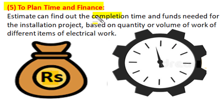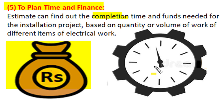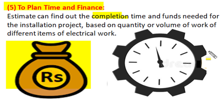The ultimate object of electrical estimation is to plan time and finance. The detailed estimation can find out the completion time for the project and the funds required for installation activity. Based on the type of material, quantity, and volume of work, we can assess both completion time and financial requirement of any electrical installation project.